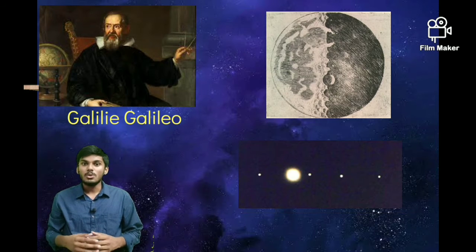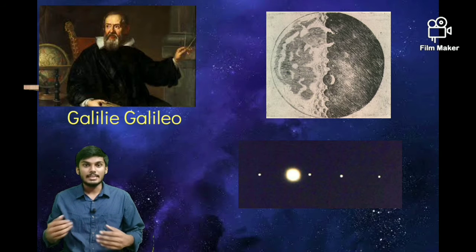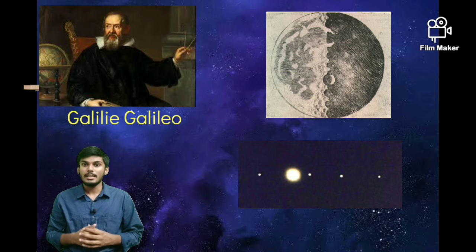He was the first person to observe the mountains and craters on the surface of the moon. He also observed the Saturn rings, moons of Jupiter, and sunspots.